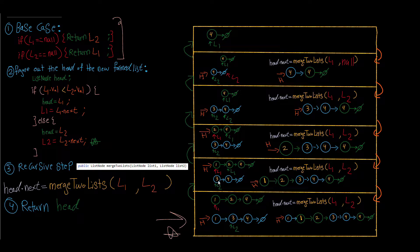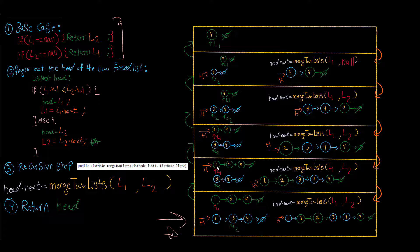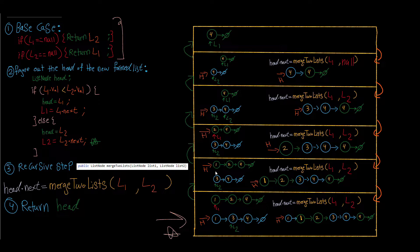We make a head pointer and check: is list one smaller than list two? Yes, one is less than three, so head points to list one's node one. We advance list one to node two. Then at the recursive step again, head dot next calls merge two lists — this time list two stays the same but list one is smaller, now pointing to two connected to four.